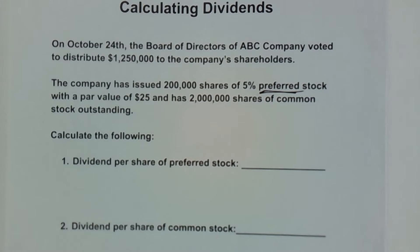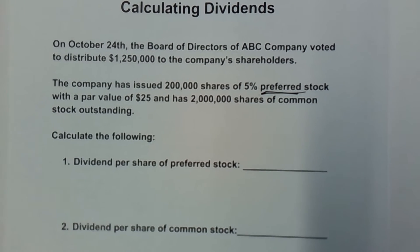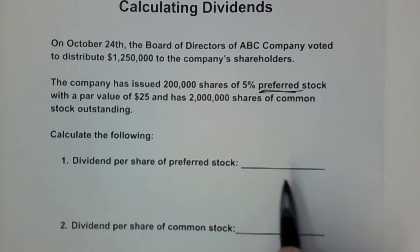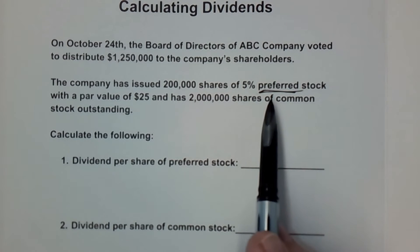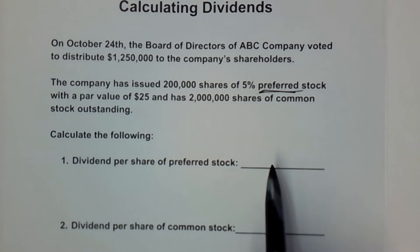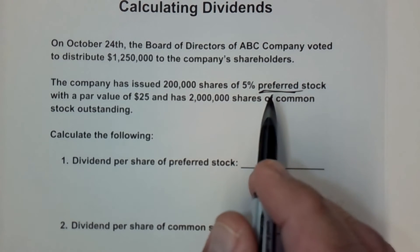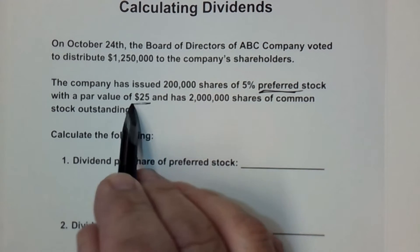There are other differences between the two types of stock. For one thing, common stock gets to vote on things happening in the company, whereas preferred stock generally does not. Also, the distribution to preferred stock, even though it comes first, is often limited — and in this case, it is limited to 5% of the par value.